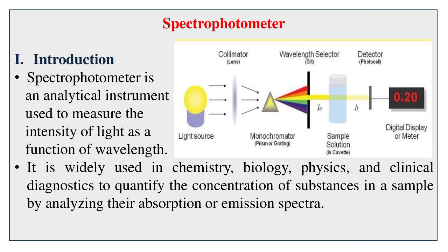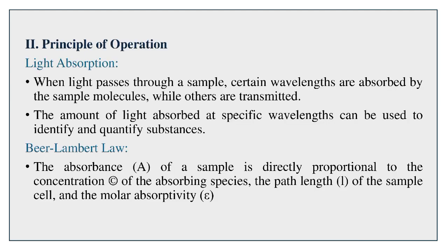Spectrophotometer — Introduction. A spectrophotometer is an analytical instrument used to measure the intensity of light as a function of wavelength. It is widely used in chemistry, biology, physics, and clinical diagnostics to quantify concentration.